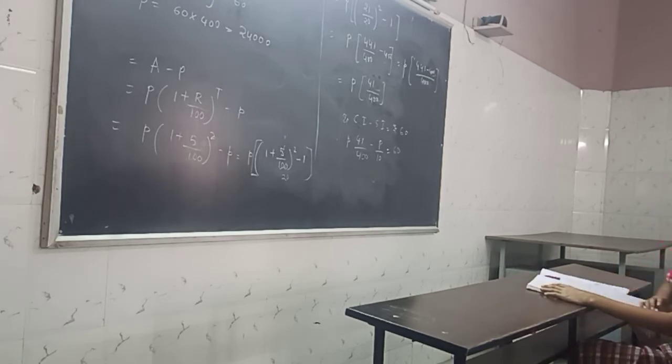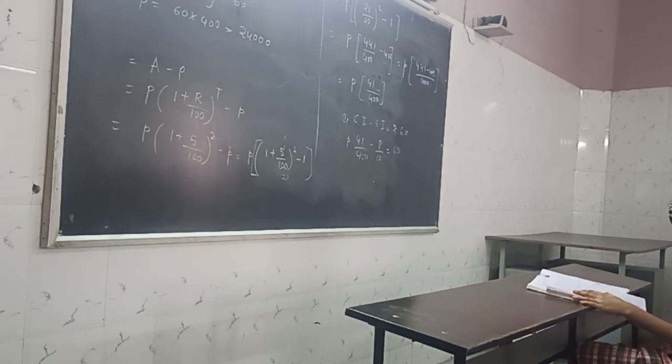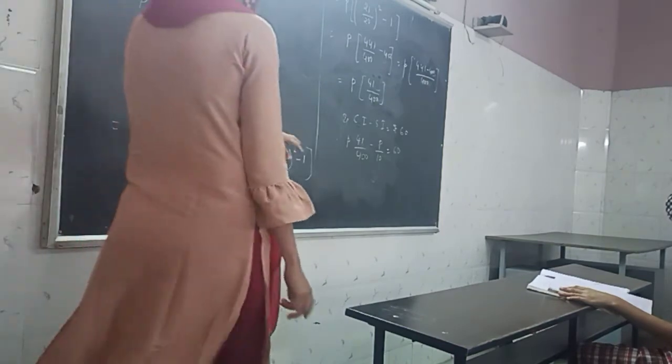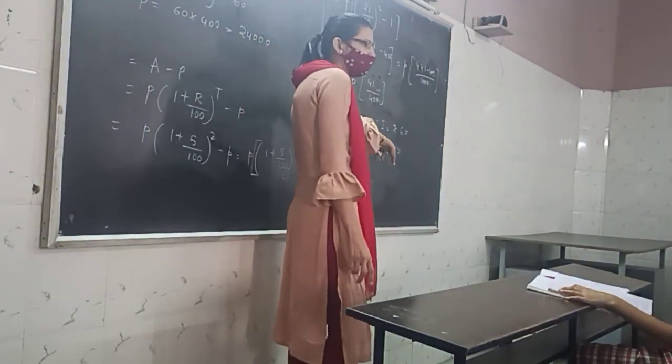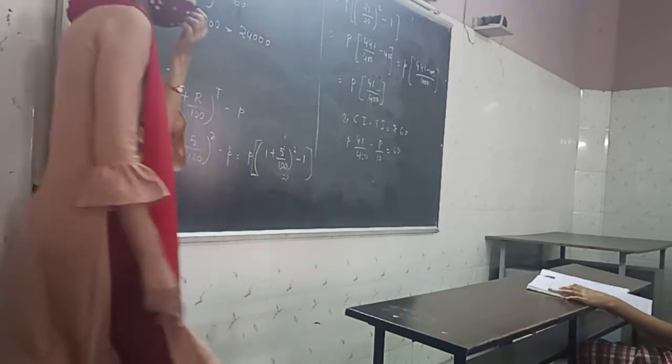What is simple interest? P, R, T by 100. P multiplied by 5, multiplied by 2, divided by 100. So, 2 times 5 is 10 on top. So, zero cuts. So, P by 10. This is simple interest. Now what is compound interest? Compound interest is amount minus principal.